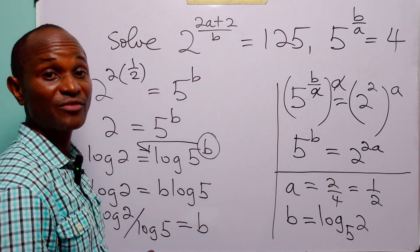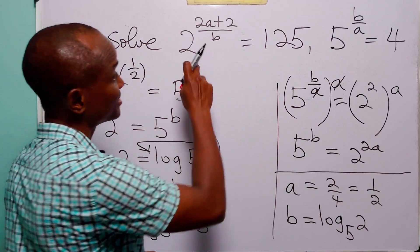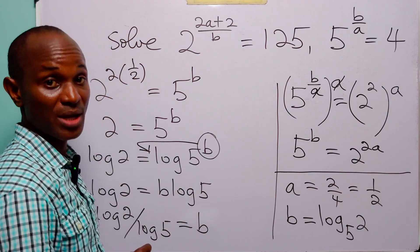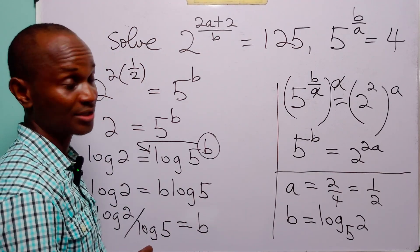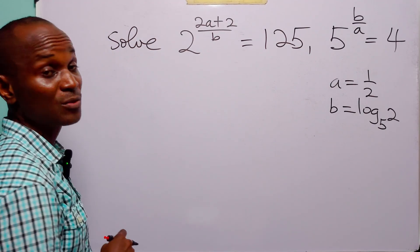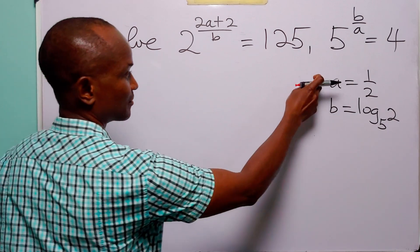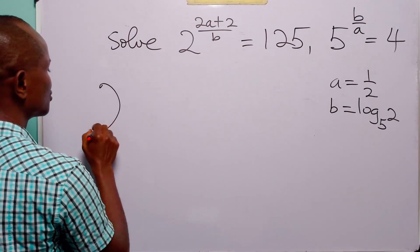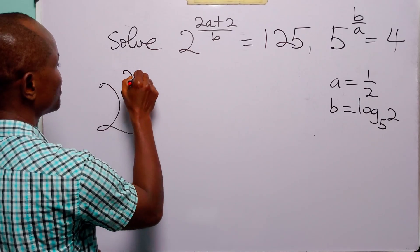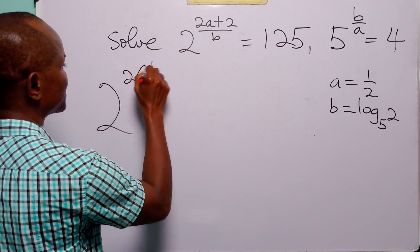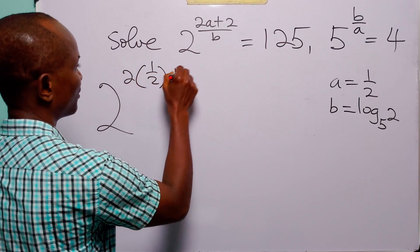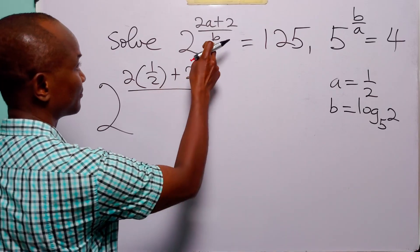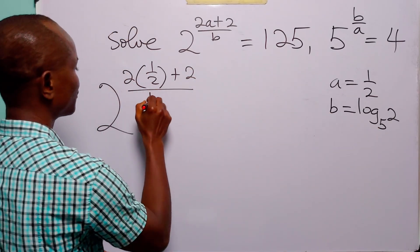Now we check these values. Substituting both A equals 1/2 and B equals log base 5 of 2 into the first equation, we have 2 to the power (2 times 1/2 plus 2) divided by log base 5 of 2.